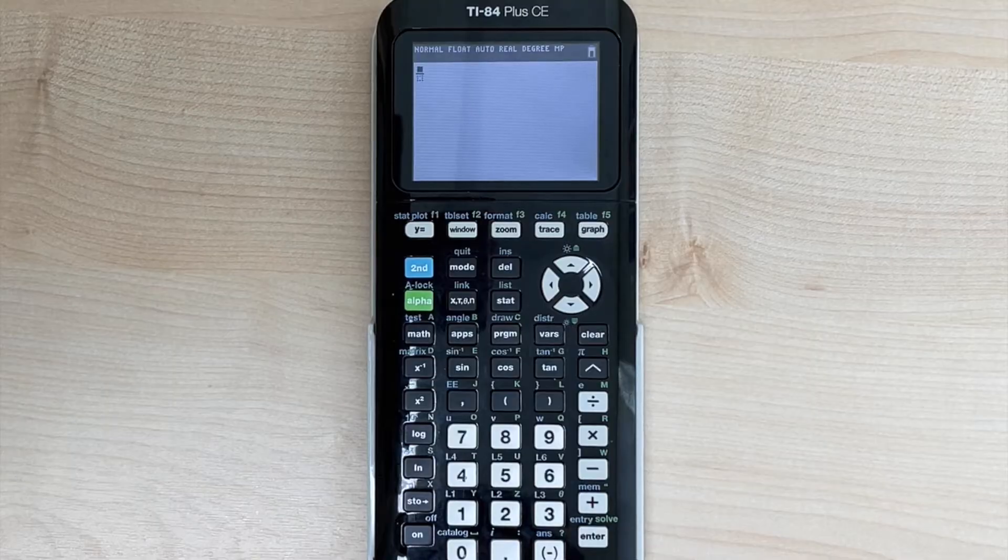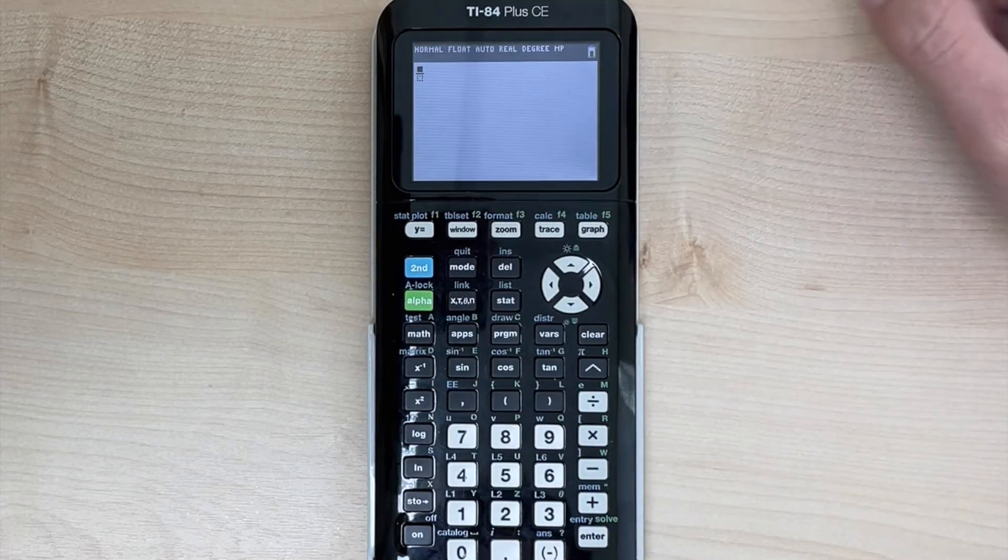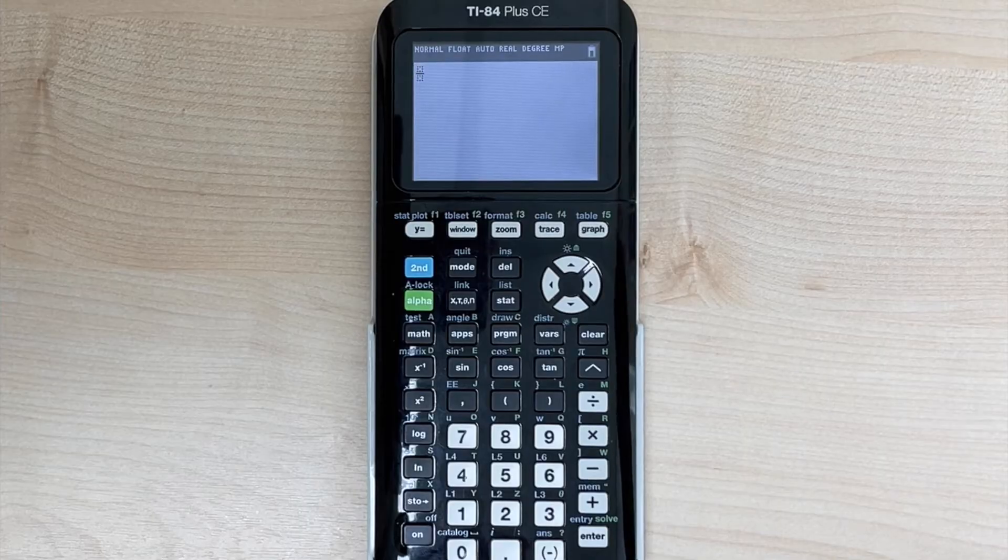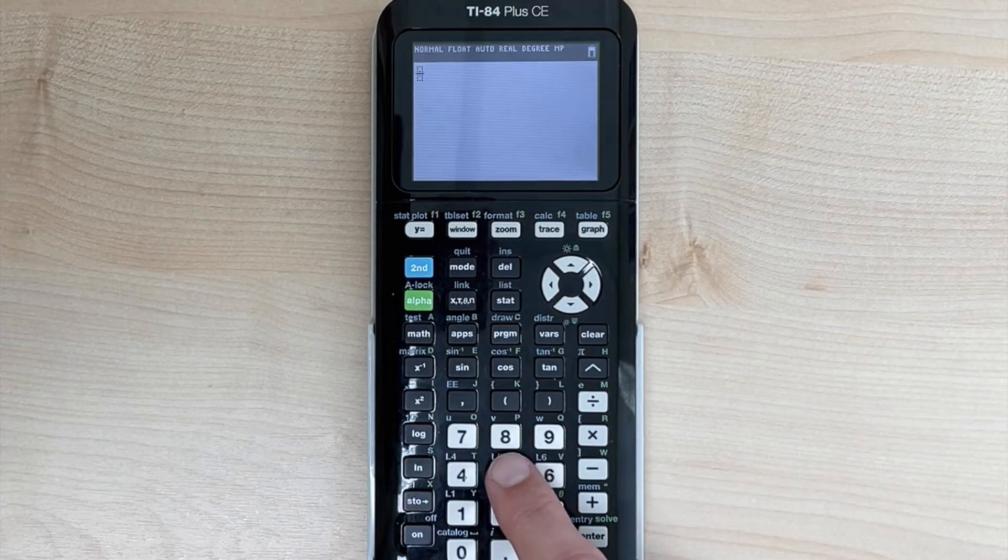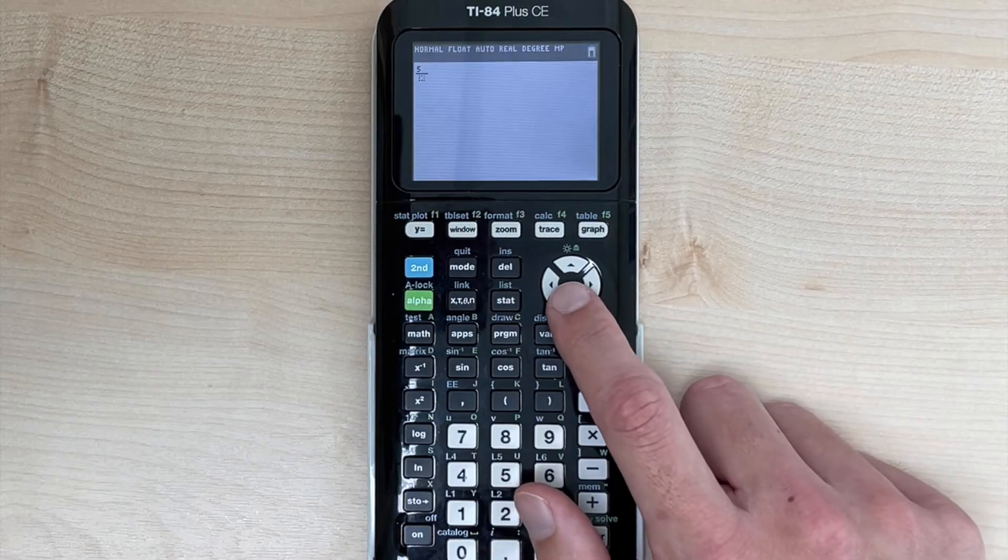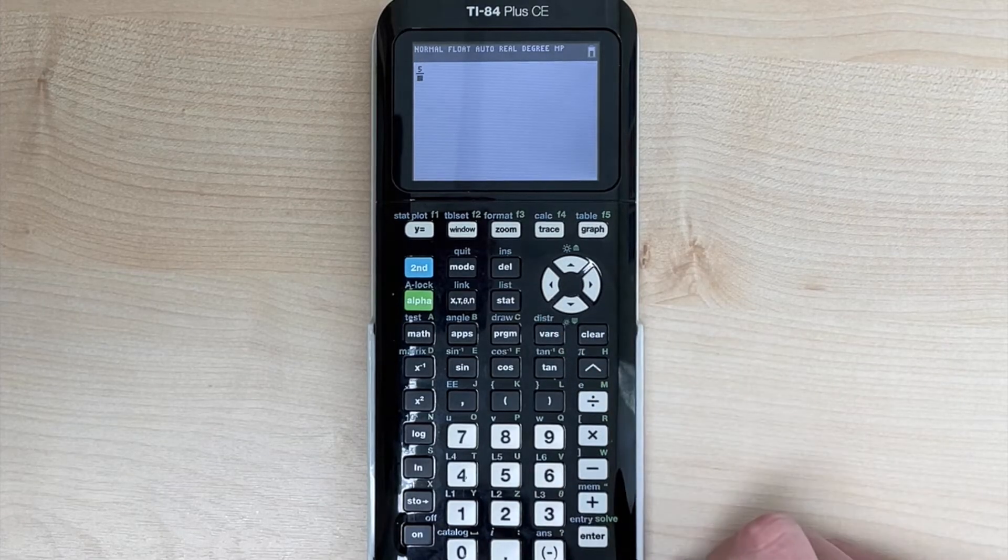So we can hit enter to be able to do that. And if you notice on our screen, it gives us a flashing box for the numerator and a flashing box for the denominator. So at this point, we can type in whatever value that we want at the top and use the down directional key to go to the denominator.